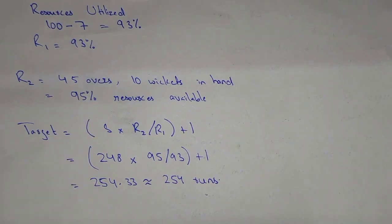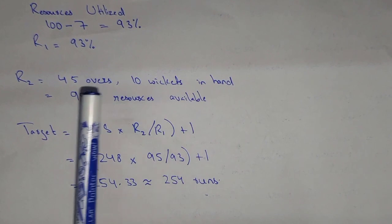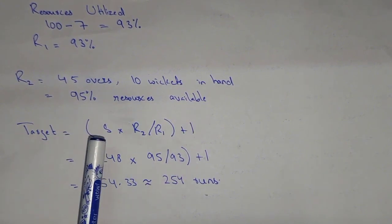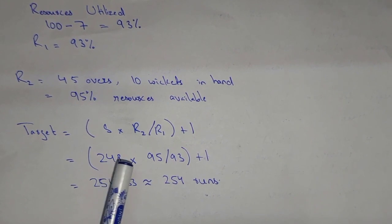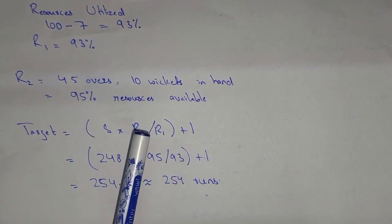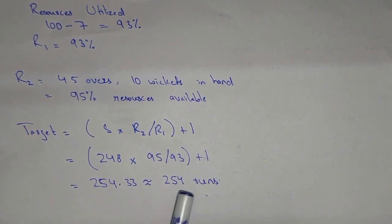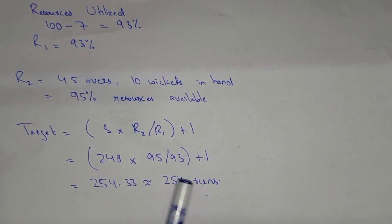Now R2 — resources available for Team 2. They come to bat with 45 overs and 10 wickets in hand, giving 95% resources available. So the target = 248 × (95 / 93) + 1, which gives 254.33, equivalent to 254 runs. This calculation is made with the help of software which is more accurate, and you may find a minor variation of one or two runs, but it works almost the same way.